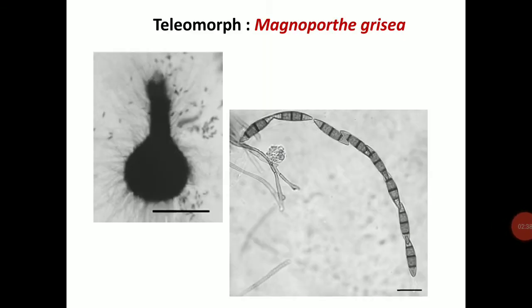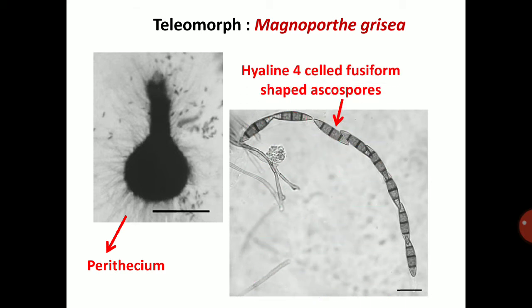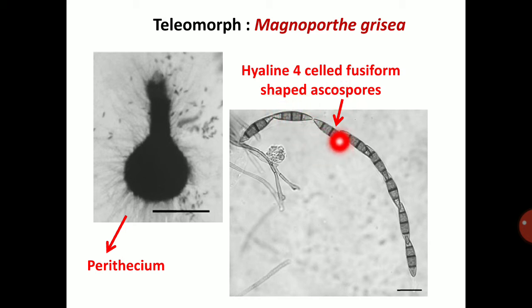The teleomorph stage is Magnaporthe grisea. In Magnaporthe grisea, it produces pear-shaped or pyriform perithecia. The perithecia contain asci and ascospores. Ascospores are hyaline, four-celled, and fusiform-shaped, with four cells meaning three septations, and the ascospore is slightly curved.